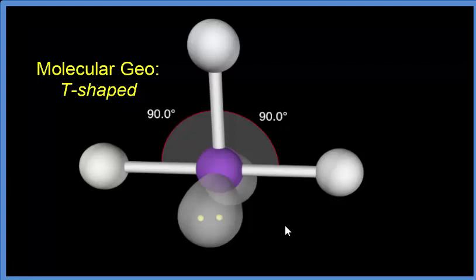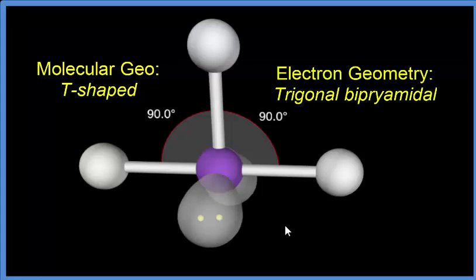If we looked at the electron geometry, we'd have to take into account the lone pairs here, we'd have something called trigonal bipyramidal.